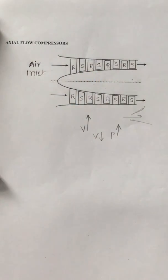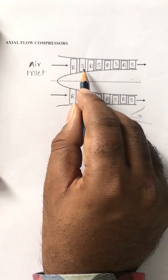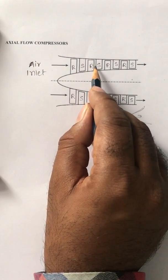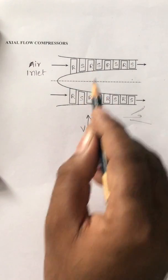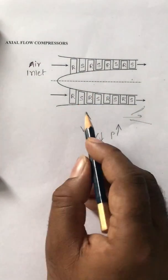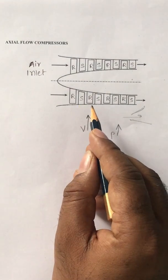After entering into the second stage, further acceleration takes place and then further deceleration and increases the pressure. So in each stage, the pressure is increasing step by step. With the help of axial flow compressors we can increase the pressure.